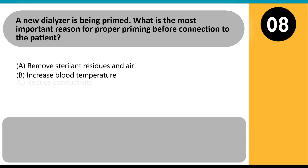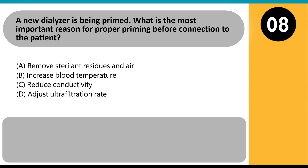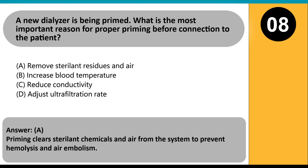A new dialyzer is being primed. What is the most important reason for proper priming before connection to the patient? A. Remove sterilant residues and air. B. Increase blood temperature. C. Reduce conductivity. D. Adjust ultrafiltration rate. Answer A. Priming clears sterilant chemicals and air from the system to prevent hemolysis and air embolism.